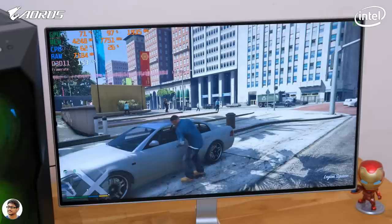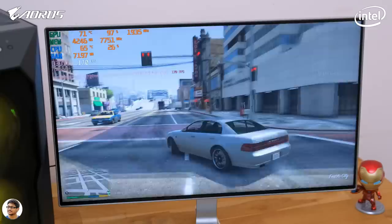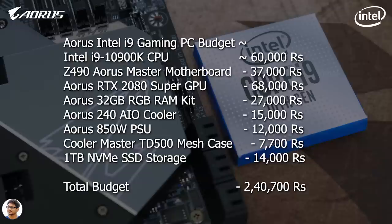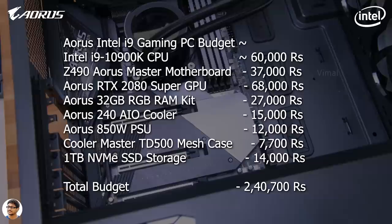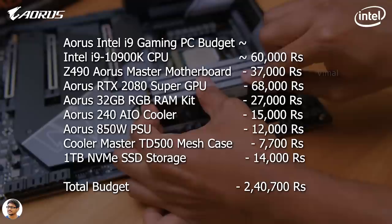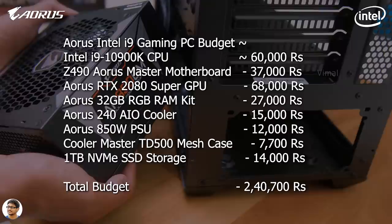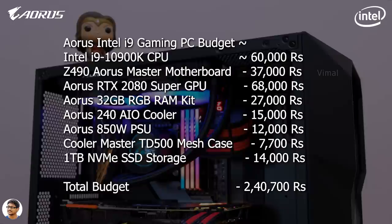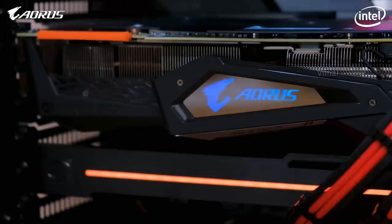The only question remaining is about the pricing of Intel's 10th gen CPUs in India, which is not yet known. I'm assuming the i9-10900K will cost around 60,000 rupees — to be confirmed. The Z490 AORUS Master motherboard is priced at 37,000 rupees. The AORUS RTX 2080 Super GPU costs 68,000 rupees. The AORUS 32 GB RAM kit clocked at 3600 MHz costs around 27,000 rupees. The AORUS 240 AIO is available for 15,000 rupees. The AORUS 850W PSU costs 12,000 rupees. Cooler Master's TD500 Mesh Edition is priced at around 7,700 rupees. Storage is left to your own choice. The total budget of this AORUS Intel gaming PC comes to 2.4 lakh rupees.